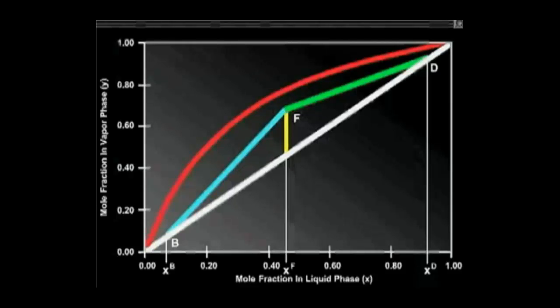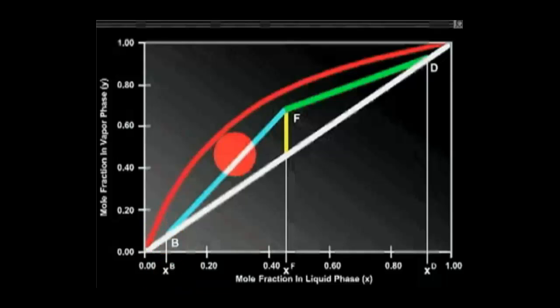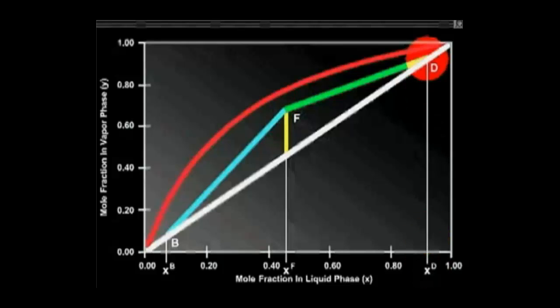The total number of theoretical stages in the column can be stepped off starting either at the composition xb and stepping upward, or starting at xd and stepping downward. We will start at xb.